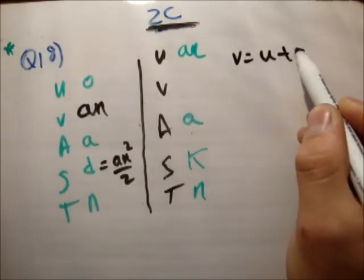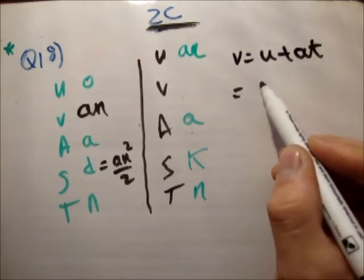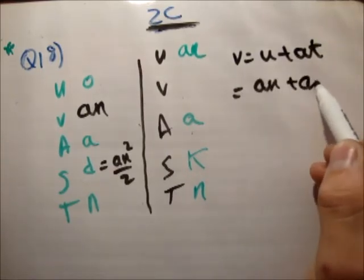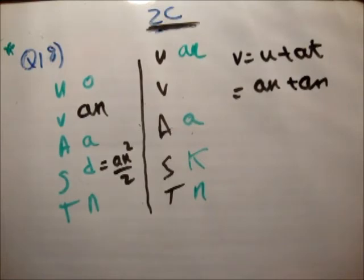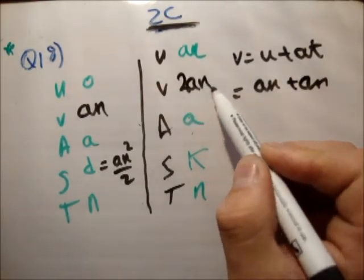v is equal to u plus at is equal to an plus an is equal to 2 times an. Is that correct? Yeah. That's correct.